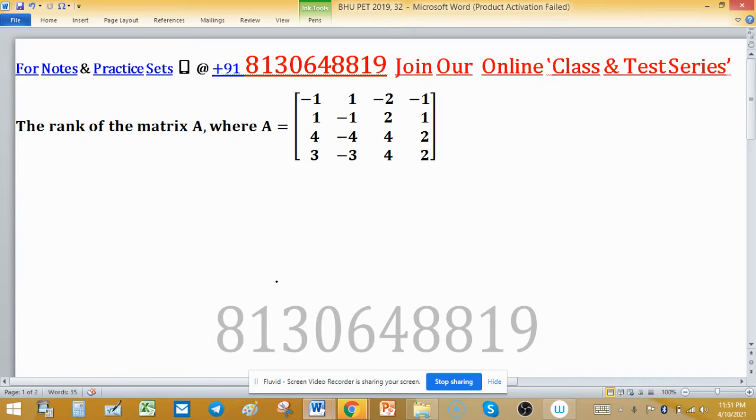So first of all, row reduce this matrix and find the number of nonzero rows. Apply row operations. We are changing R2 by R2 plus R1, second is R3, we are changing R3 plus four times R1, and R4 is changing by R4 plus three times R1.